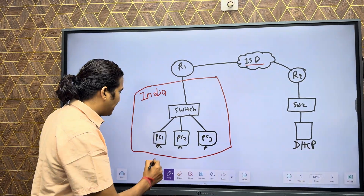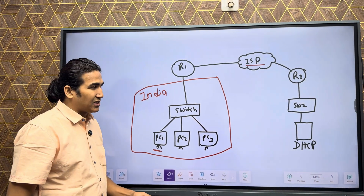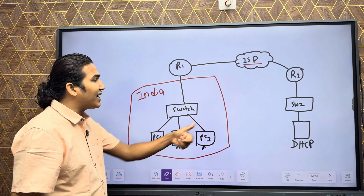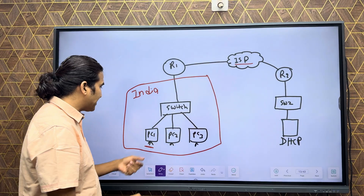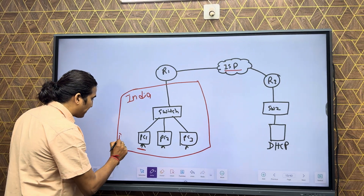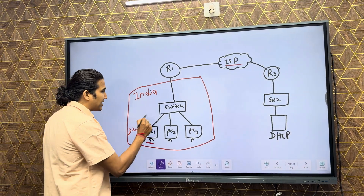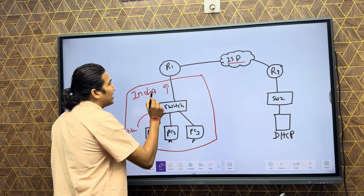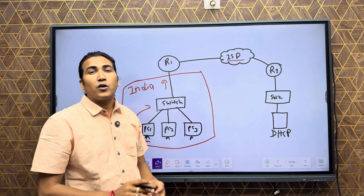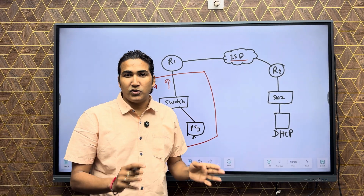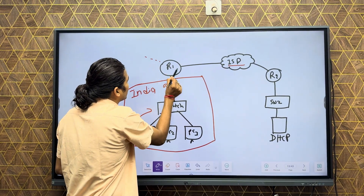In this case, if the client machine needs an IP address from the DHCP server, it can't discover the DHCP server directly. The client machine will generate a Discover message. The Discover message is a broadcast — it is sent to the switch, the switch sends it to the router. Can the router forward it to the ISP? No, because the router breaks the broadcast domain.